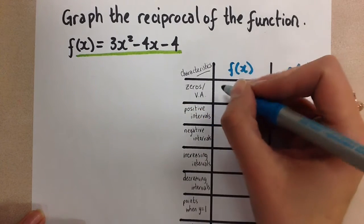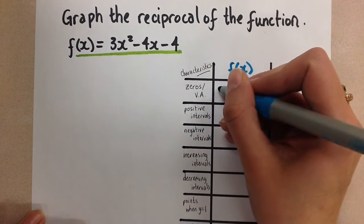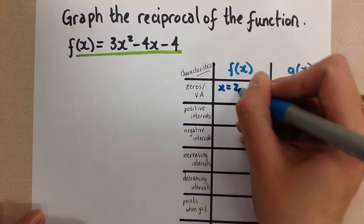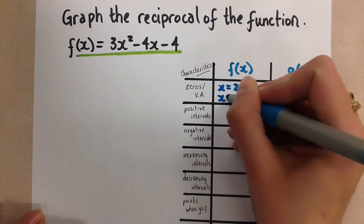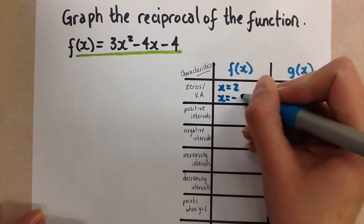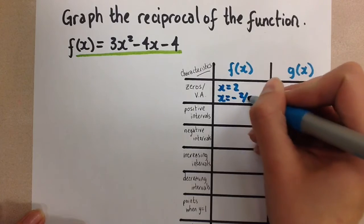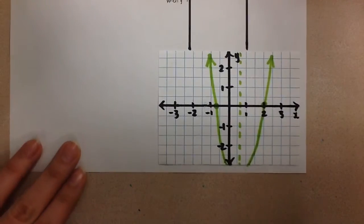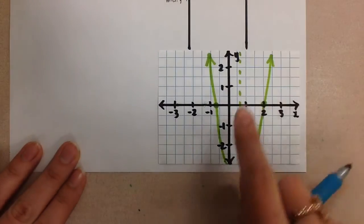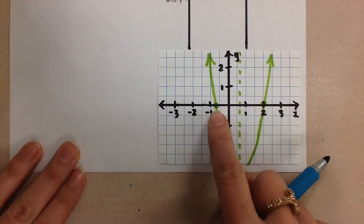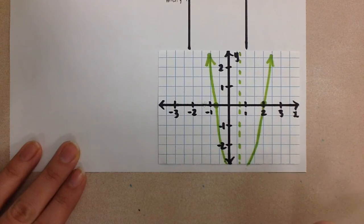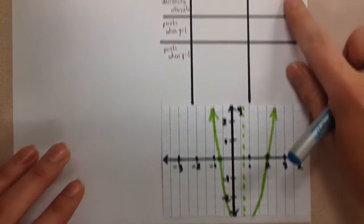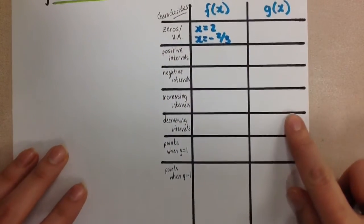When I got the zeros of this function, they were x equals positive 2 and x equals negative 2 over 3. You can see those marked on the graph — there's my negative 2 over 3, and there's my positive 2 as the two zeros for that quadratic function.